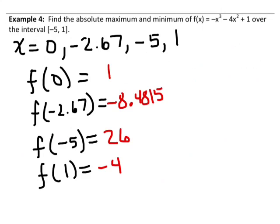Take a look at those values and think for a second. What do you notice? I notice that negative 8.4815 seems to be the smallest value, and 26 seems to be the largest value. So when x equals negative 2.67, we have an absolute minimum, and when x equals negative 5, we have an absolute maximum.